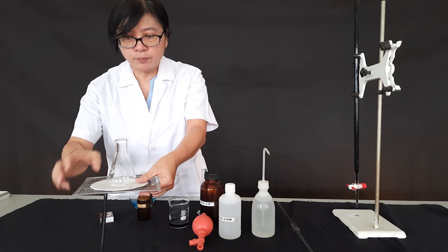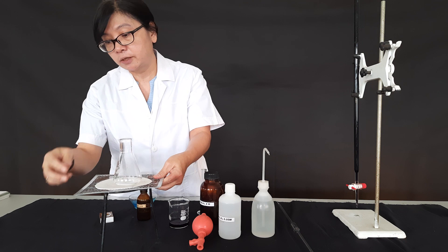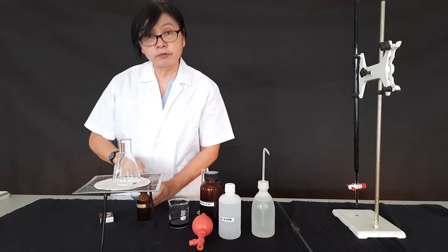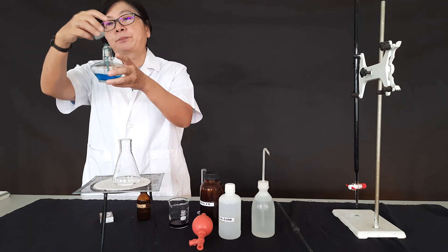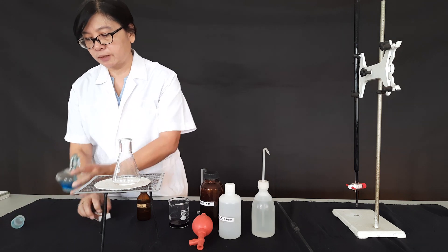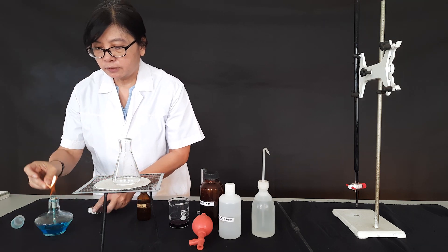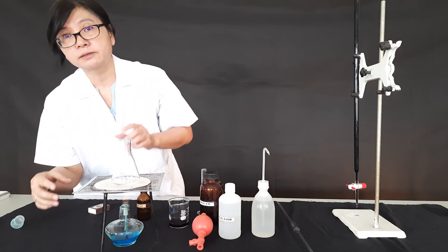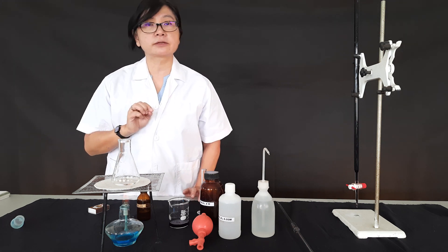We place the conical flask on the tripod here, then we use a spirit lamp underneath. We fill and light it, then wait several minutes until the solution is hot but before it boils.